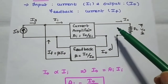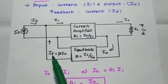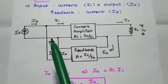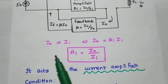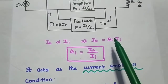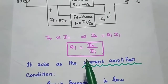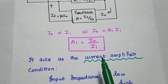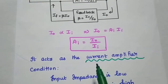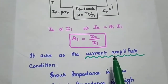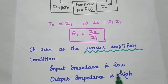Here the output is current, so we can use current sampling, that is series sampling method. Here the feedback is a current signal. We can connect the current feedback in parallel form with the input side. Here the output current is directly proportional to the input current, where the proportionality constant is the gain of the amplifier ai equal to output current divided by input current.